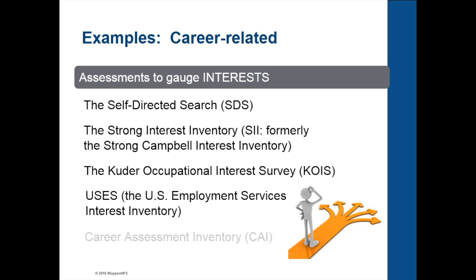Just to give you some actual examples of career-related assessments, I list five here, starting with the self-directed search (SDS) down to the career assessment inventory (CAI). To focus your attention on the second one, the Strong Interest Inventory — this is probably one of the most widely used interest assessments. It was developed by Edward Strong back in the 1920s and revised by Holland later on with his six codes or typologies: realistic, investigative, artistic, social, enterprising, and conventional. The idea is that most of us have interests that fall into some combination of those six areas. When you take the assessment, you get a three-letter code — something like RIC, to stand for realistic, investigative, and conventional — and it guides you to particular career areas that you're most likely to find interesting and, by extension, be more successful.